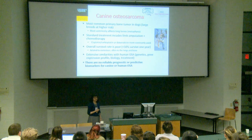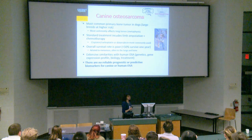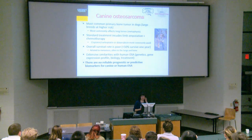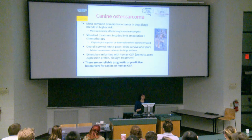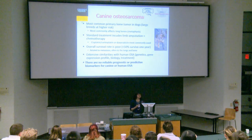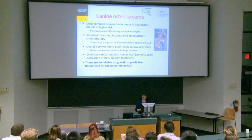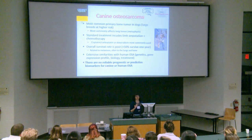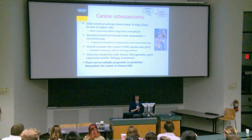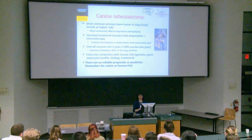Why are we studying canine osteosarcoma? It is a real clinical problem in veterinary medicine — the most common primary bone tumor in dogs, affecting mostly large breeds and most commonly the long bones. Standard treatment includes limb amputation and chemotherapy, typically carboplatin or doxorubicin. Despite this aggressive treatment, the overall survival rate is only about 50% of patients surviving one year.